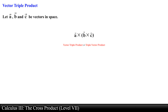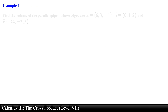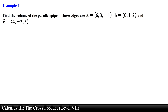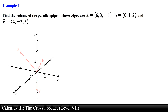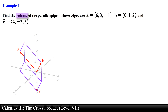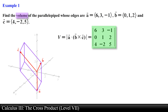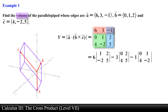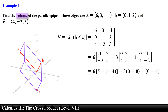Let's go over a couple of examples that make use of the scalar triple product. Find the volume of the parallelepiped whose edges are vectors A, B, and C. We are given three vectors in component form; these vectors represent the edges of a parallelepiped. We can easily find the volume by computing the scalar triple product. We write the scalar triple product in determinant form, find the minors by expanding row 1, then find the determinant of each 2 by 2 matrix and simplify, obtaining a final answer of 82 cubic units.